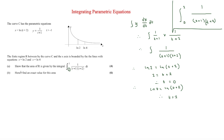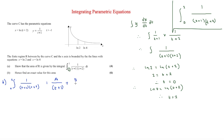The next part asks us to find an exact value for this area using partial fractions. We write 1 over (t plus 1)(t plus 2) as A over (t plus 1) plus B over (t plus 2). Multiplying through by the denominator gives 1 equals A(t plus 2) plus B(t plus 1).